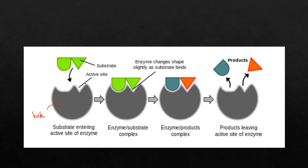When the substrate fits or binds at the active site of an enzyme, the resulting product is known as the enzyme-substrate complex, where the enzyme's shape changes very slightly as the substrate binds. Then the enzyme acts upon the substrate and forms products. When these products are released, the substrate has changed chemically into two different products, but the enzyme has remained chemically unchanged and can be reused for another substrate. This is basically the lock and key hypothesis.